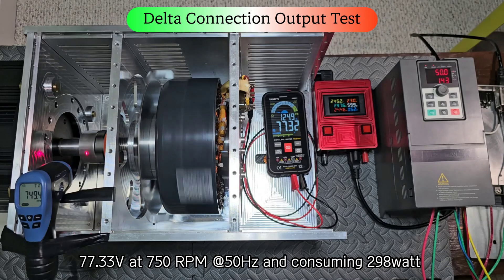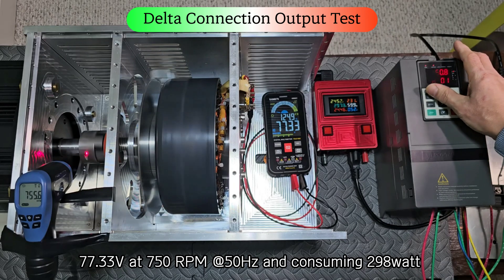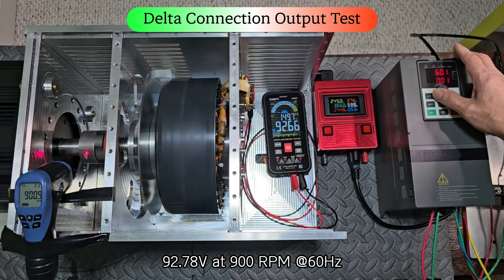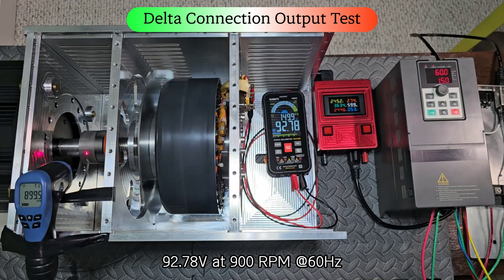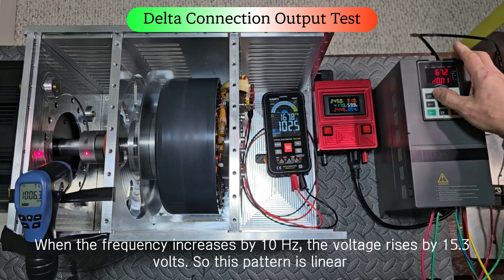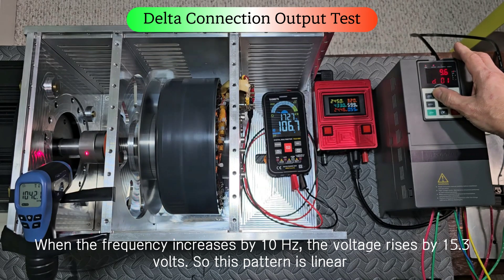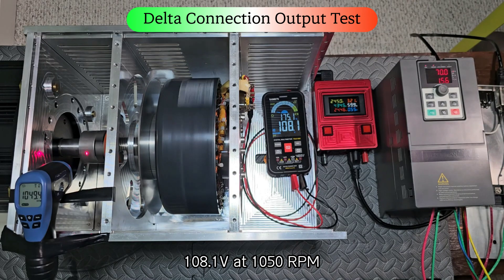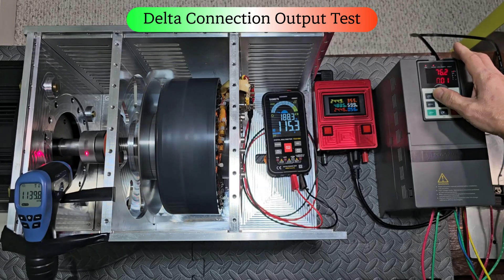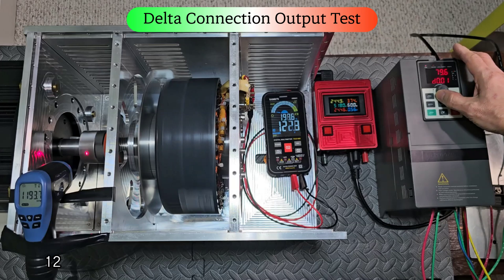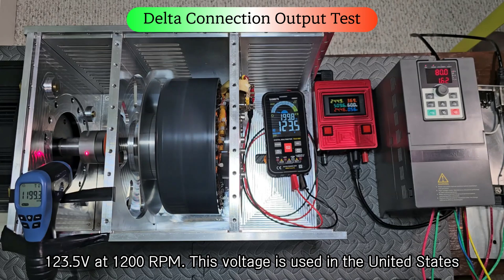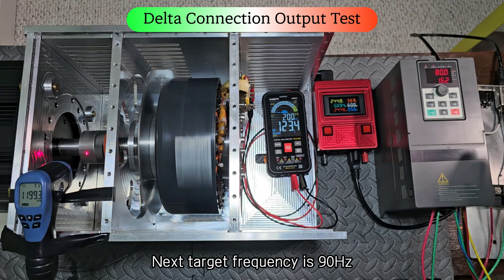77.33 volts at 750 RPM, 50 hertz, consuming 298 watts. 92.8 volt at 900 RPM, 60 hertz. When the frequency increases by 10 hertz, the voltage rises by 15.3 volts. So this pattern is linear. 108.1 volt at 1050 RPM. 123.5 volt at 1200 RPM. This voltage is used in the United States. Next target frequency is 90 hertz.